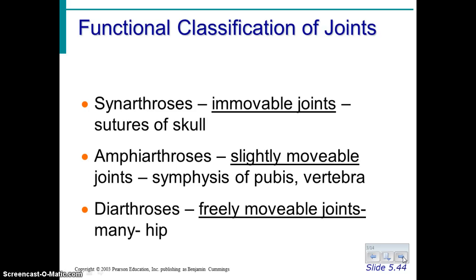Diarthrosis is the third type of classification, and that refers to freely movable joints, which is most of the joints in the human body as we typically think of them.